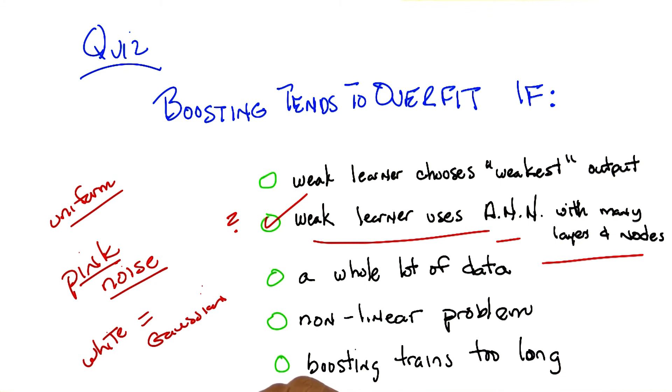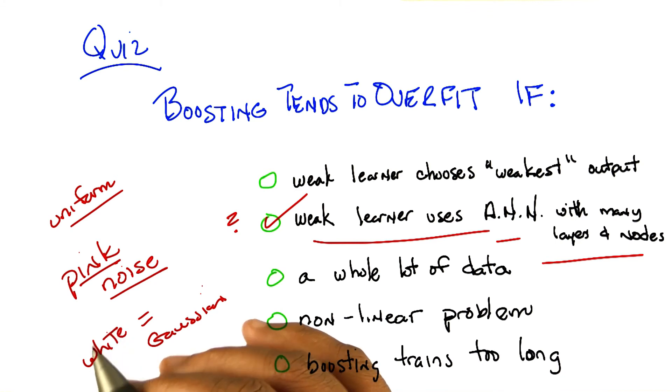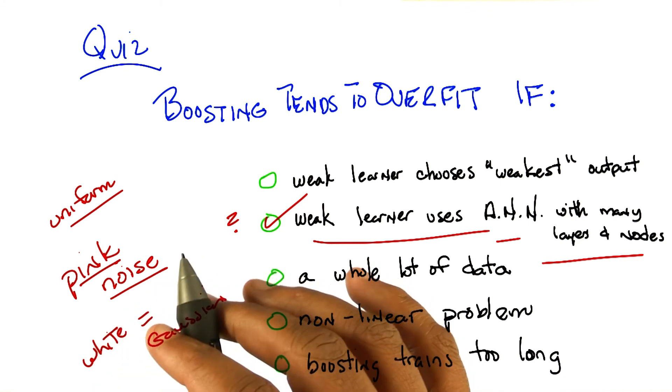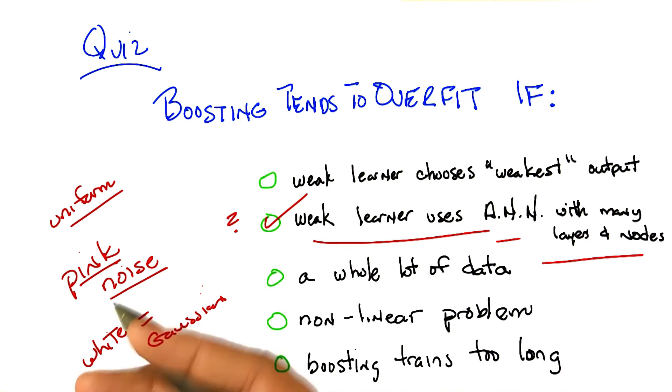This is why, Michael, by the way, if you ever try to set up a studio or a cool stereo system in your house, you want a pink noise generator so that it covers all the frequencies equally, not just a white noise generator. But boosting tends to overfit in those sorts of circumstances.